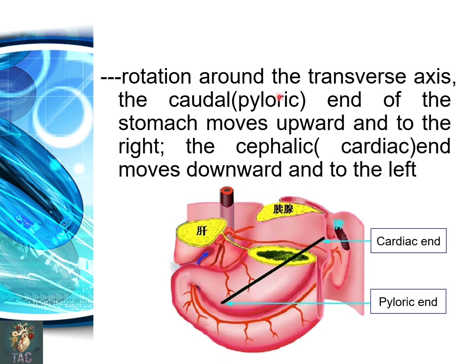Another rotation occurs at the transverse axis such that the caudal end of the stomach moves upwards and to the right, and similarly the cranial or cephalic end of the stomach moves downwards and to the right. There are usually two rotations of the stomach. One is around the longitudinal axis — as a result of this 90-degree clockwise rotation, the right side faces posteriorly and the left side faces anteriorly.